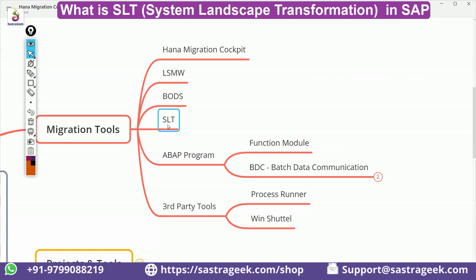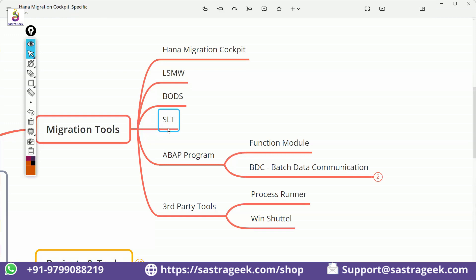SLT, which stands for System Landscape Transformation, is a specific tool used for specific purposes. You will see very less use of SLT. It is basically used to move data from ECC into the HANA database. SLT was created by a third-party company and later acquired by SAP.